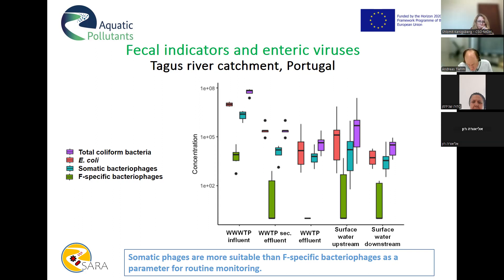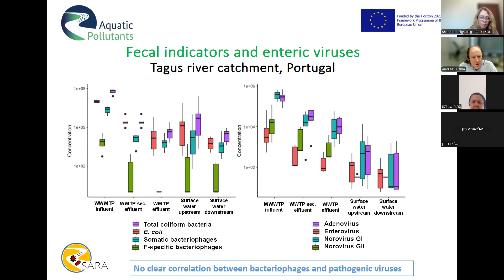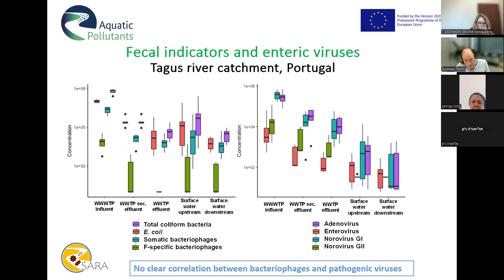Somatic phages might be more suitable as a general indicator because you have higher numbers and will detect contamination earlier. The next slide shows the same indicator data alongside pathogenic viruses detected by quantitative PCR — adenovirus, enterovirus, and noroviruses. All these pathogens are detected in wastewater samples, as expected, but they can also be detected in surface waters. However, we do not see a clear correlation with the indicator viruses.